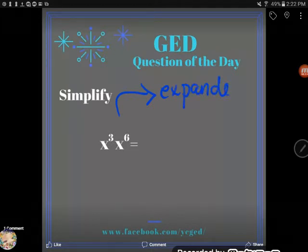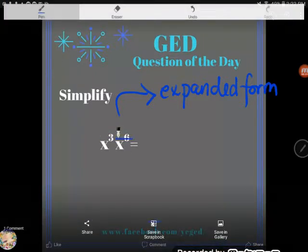Expanded form will usually shed the light on whatever you're doing. So what is expanded form? It's rewriting something with an exponent as repeated multiplication.